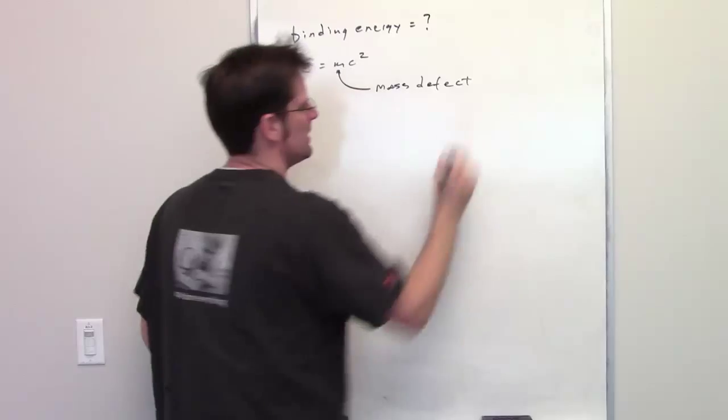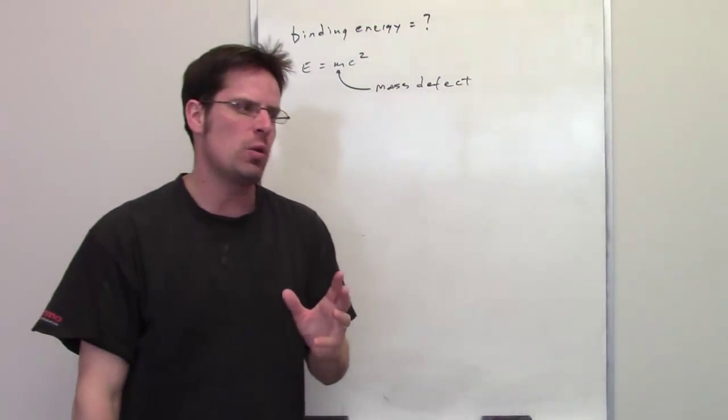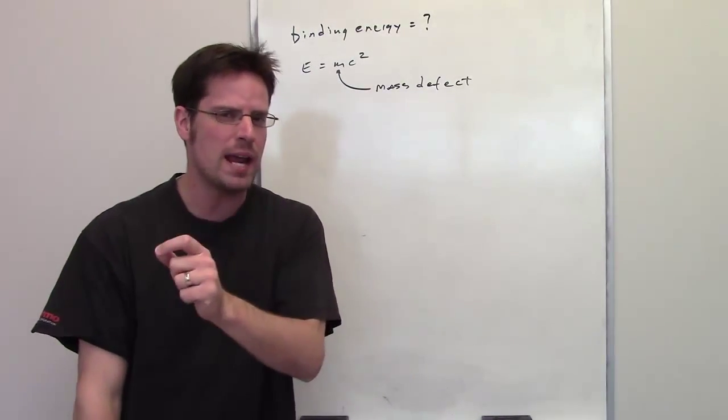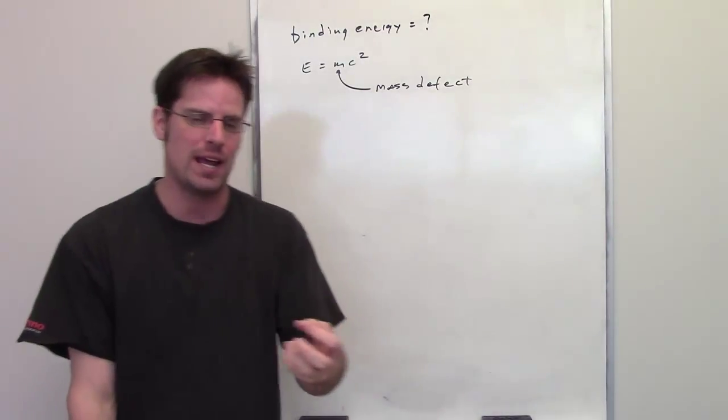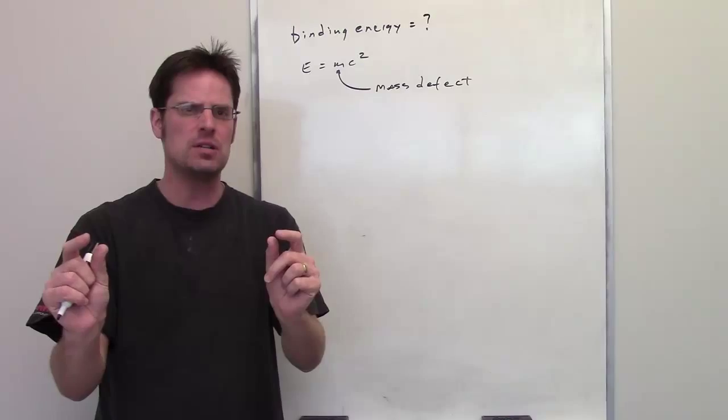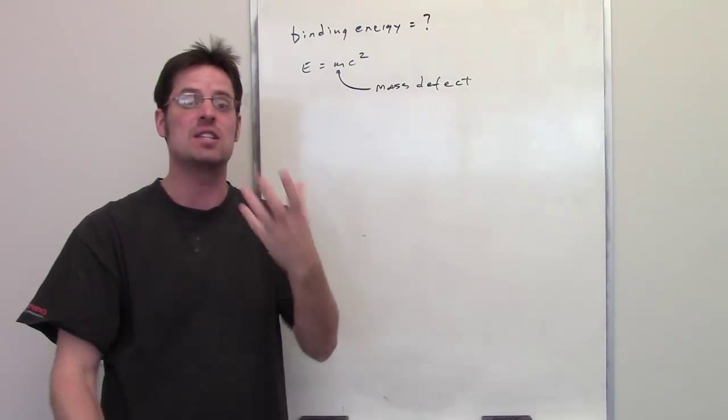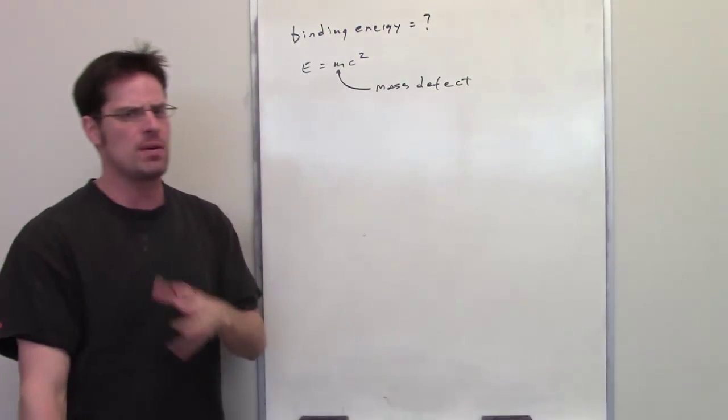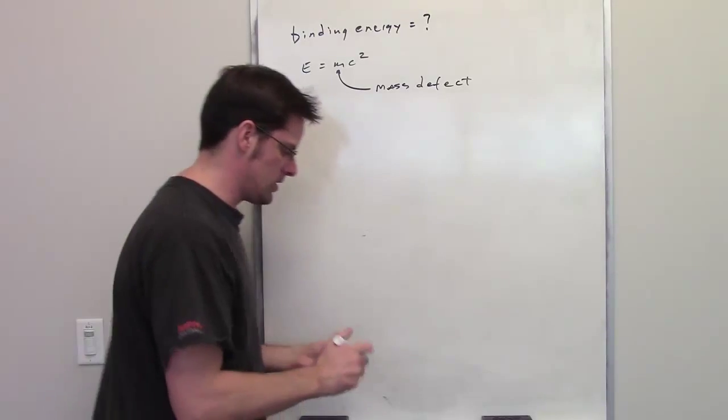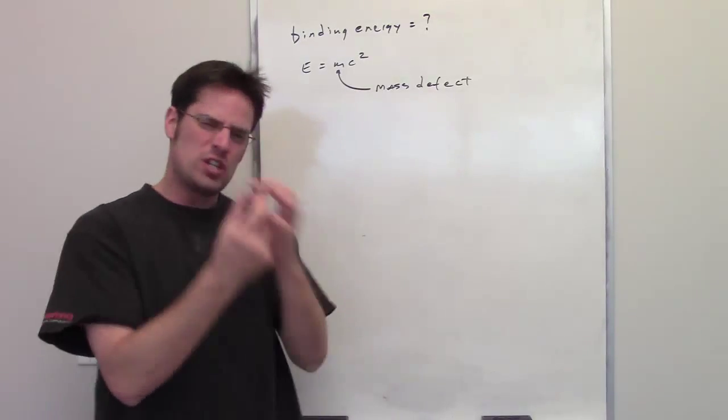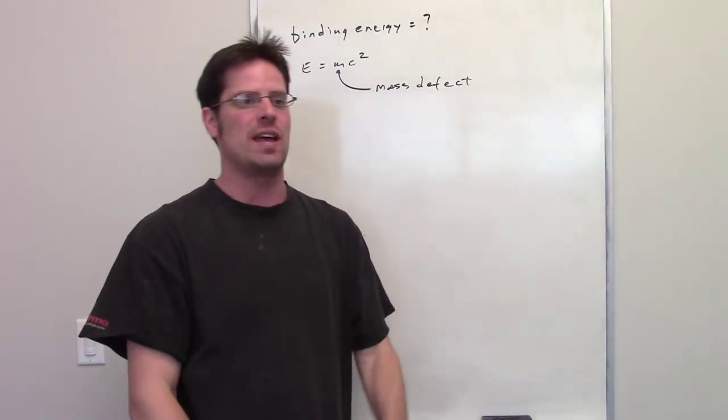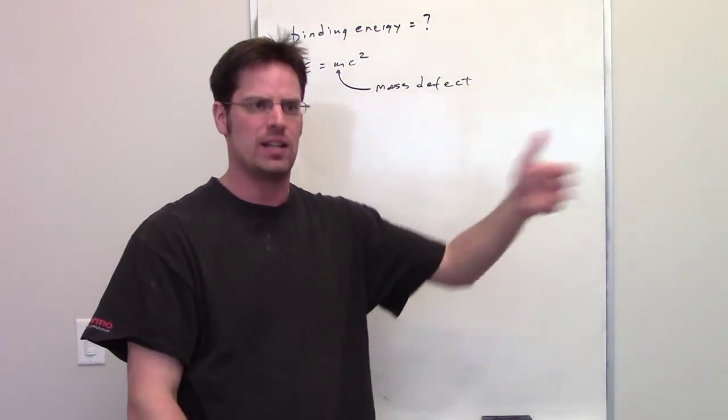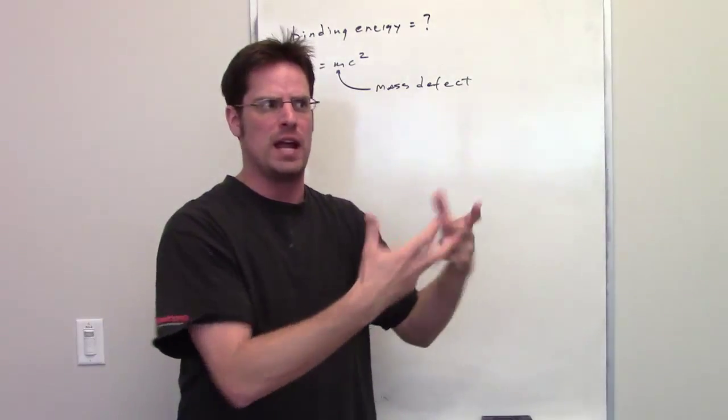The mass defect is the difference between what a cobalt-60 should weigh, calculatedly, and what it actually weighs. So if you figure out those two numbers, the difference between them is the mass defect. You might remember in the video I mentioned that neutrons and protons, when they're squished together inside a nucleus, actually end up weighing less than what they would weigh if you calculated out what they should weigh theoretically.